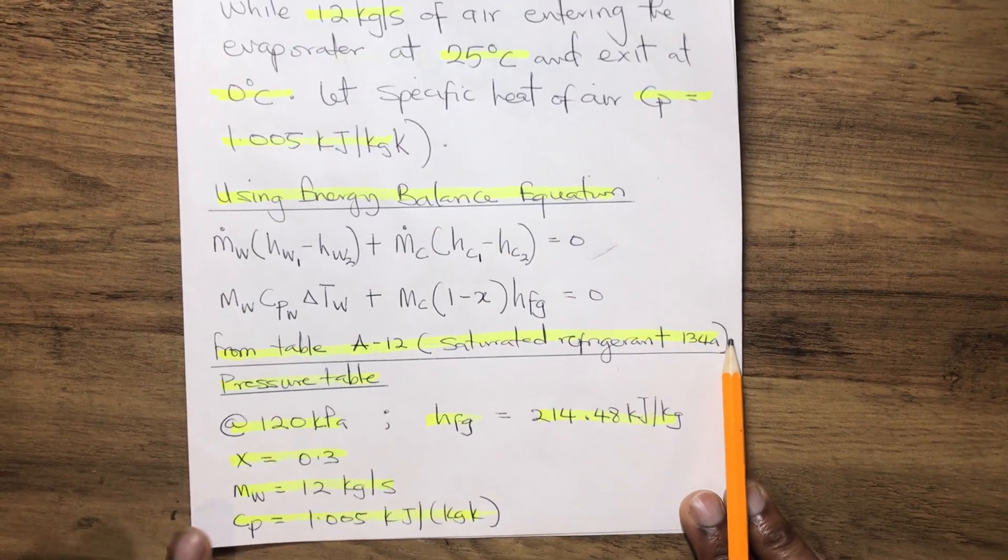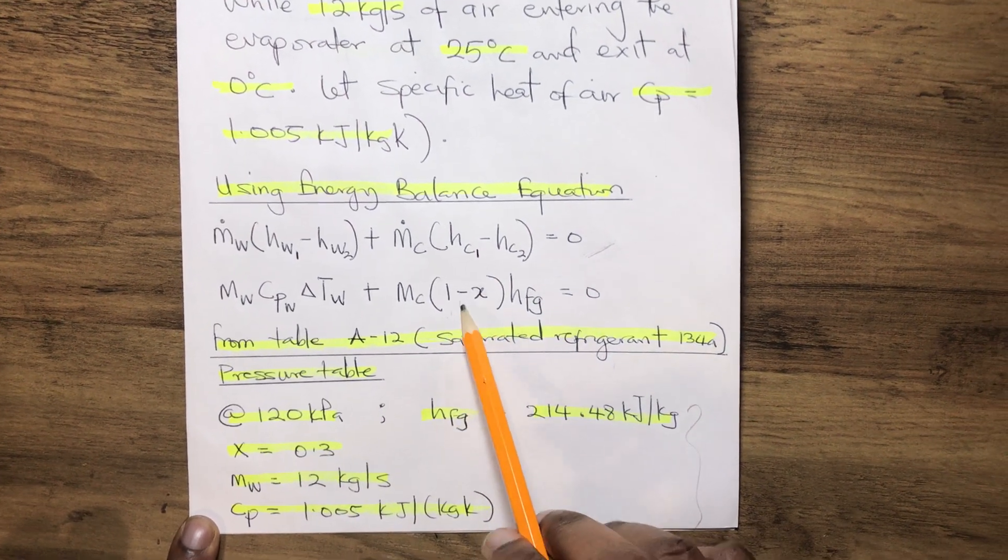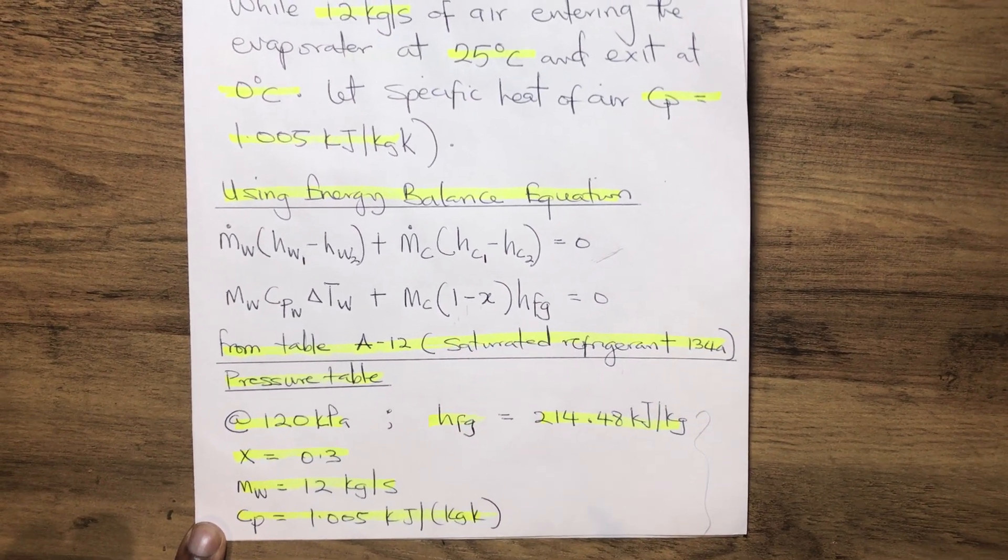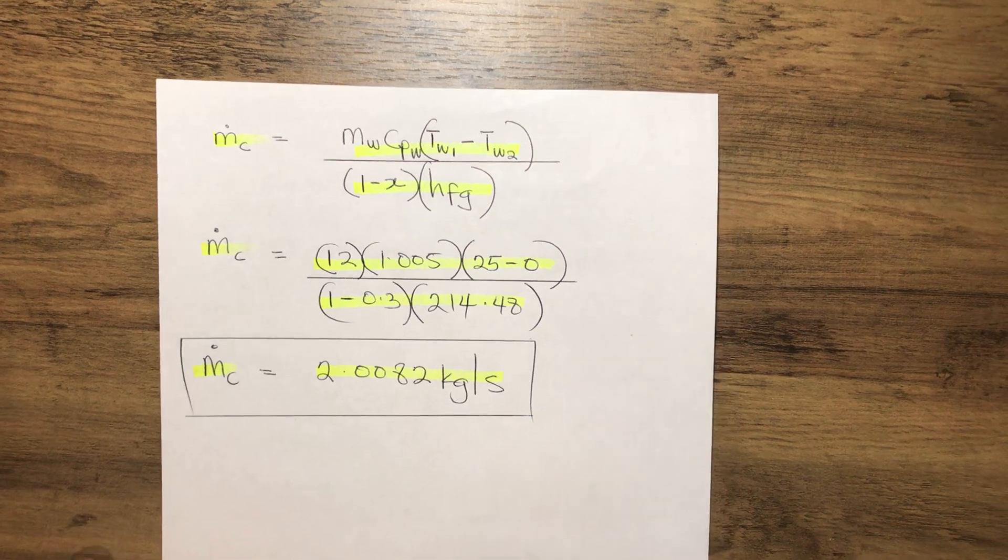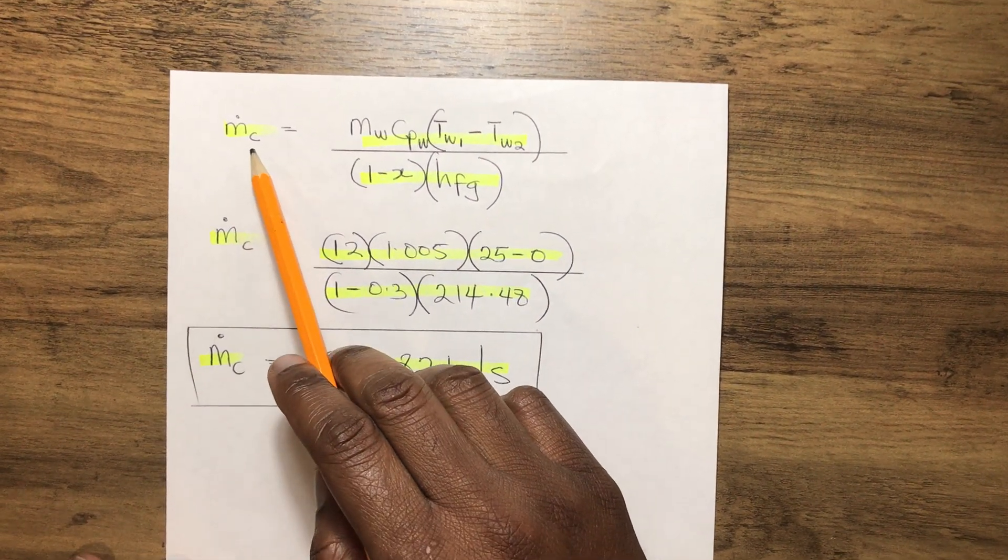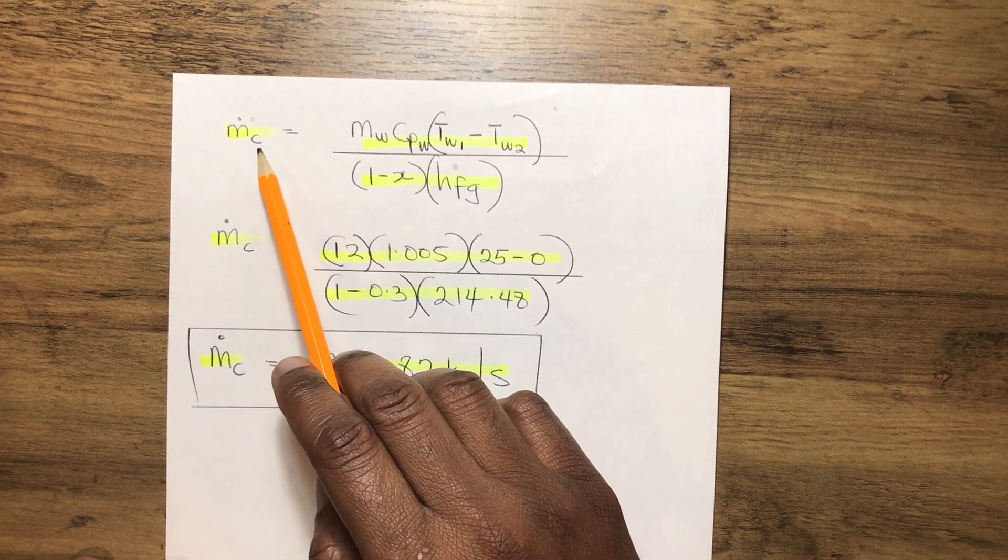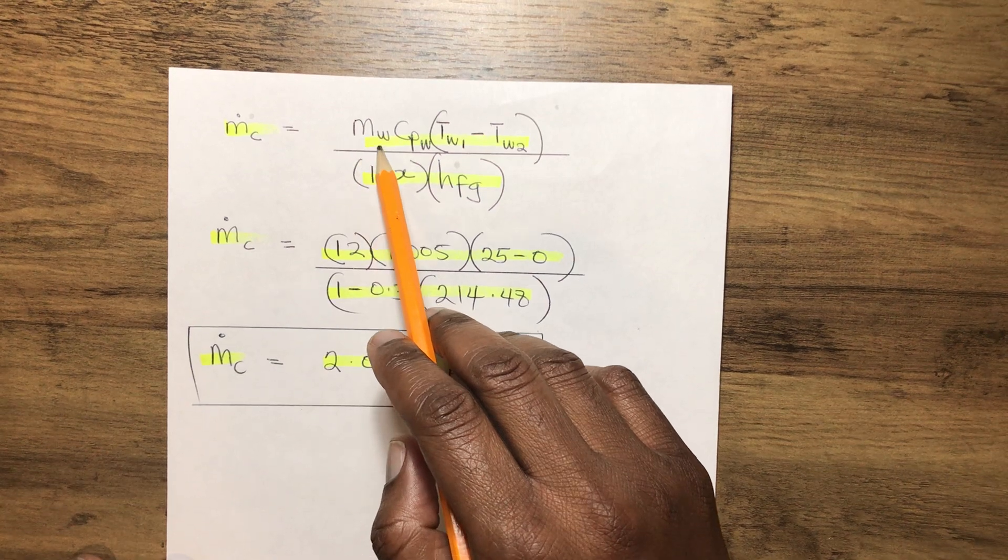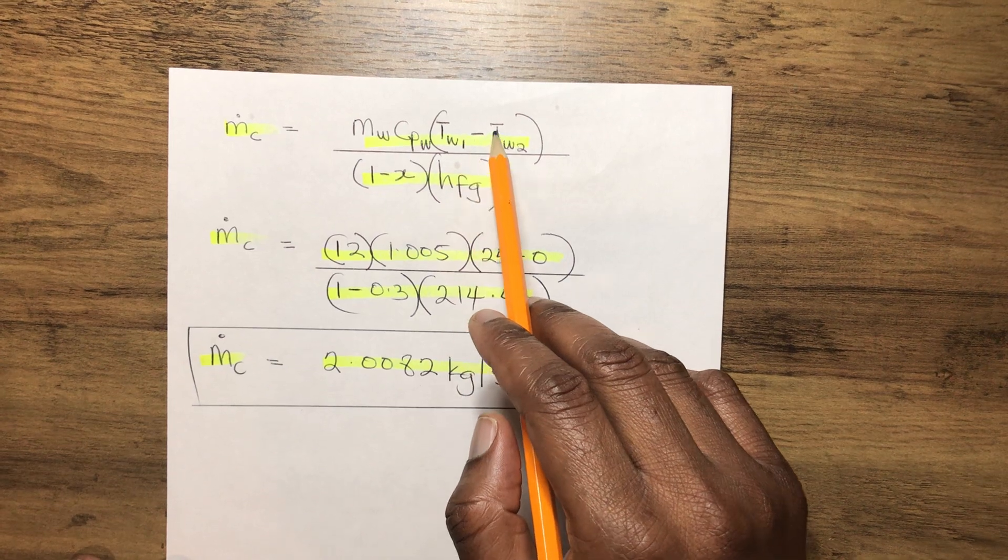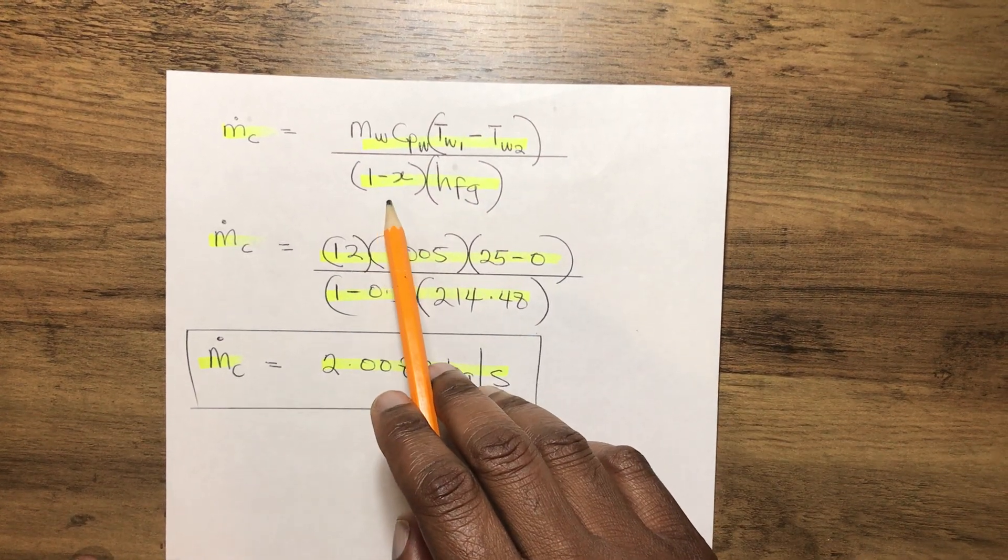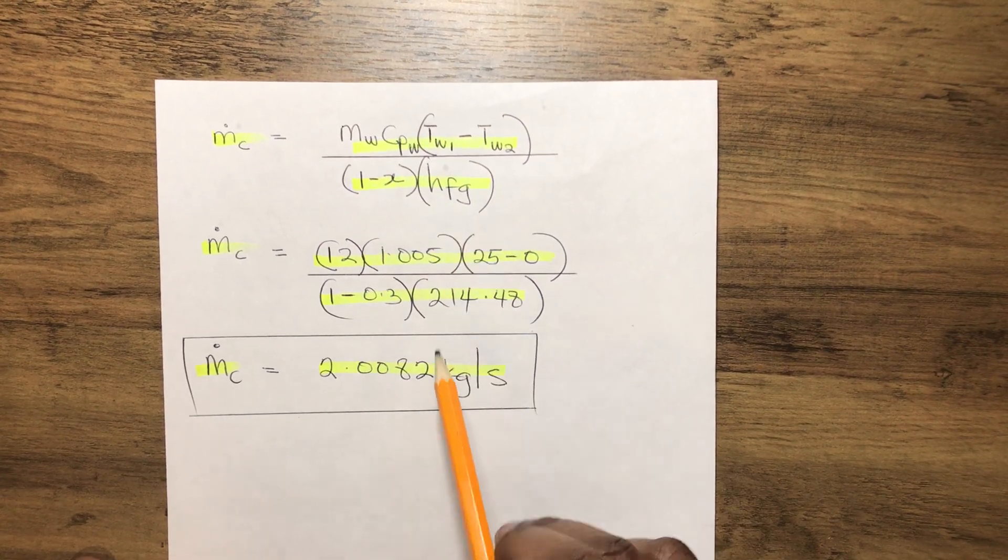Now, let's input all our parameters here into the equation given above here. So our equation becomes MC, which is the mass flow rate of the refrigerant, which is the cold fluid, which we are asked to find. That gives us MW CPW into bracket TW1 minus TW2 over 1 minus X into bracket HFG.